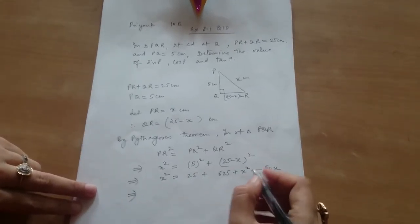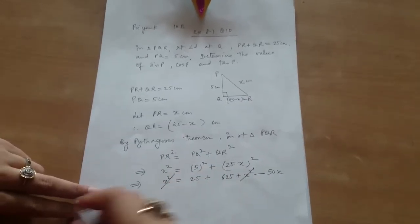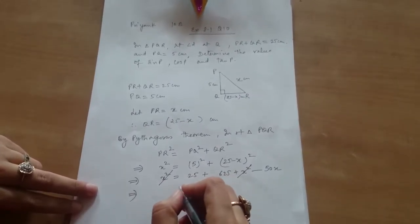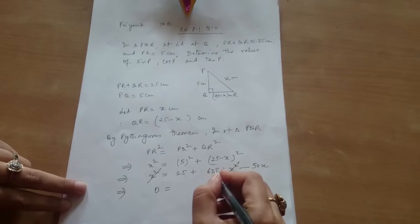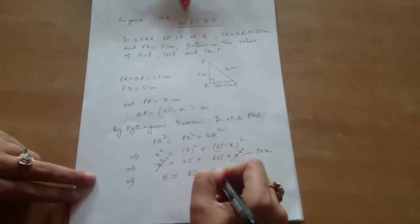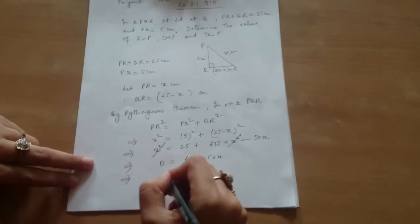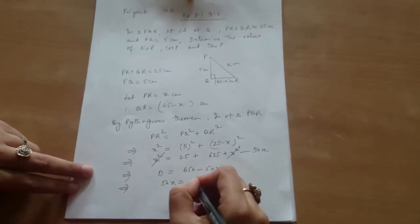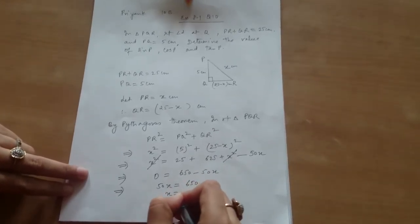Yes ma'am. From both the sides? Yes ma'am. So you are left with 0 equals 625 plus 25, 625 minus 50X. This implies 50X equals 650. So X is 650 divided by 50.